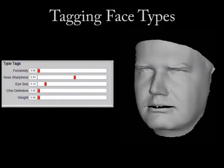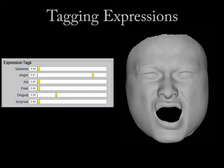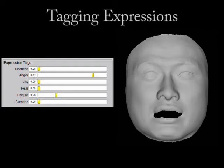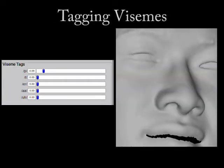Face type attributes can be arbitrary and can describe both local and global facial features. Our face type attributes include femininity, nose sharpness, eye size, chin definition, and weight. Our expression attributes are more consistent and include sadness, joy, fear, disgust, and surprise. Finally, our viseme attributes cover a subset of the existing known human viseme range.